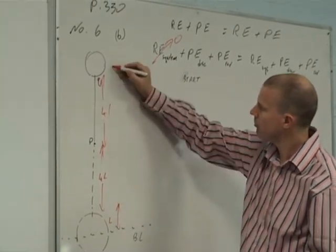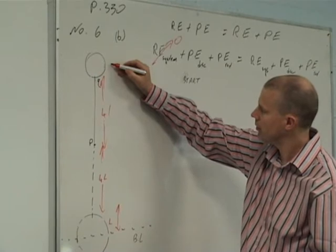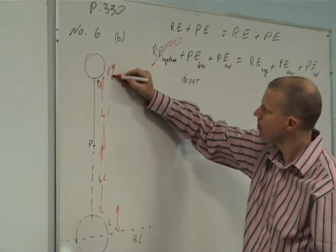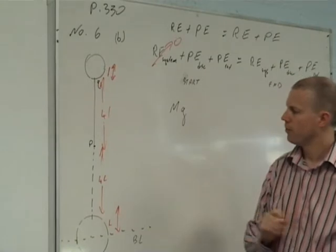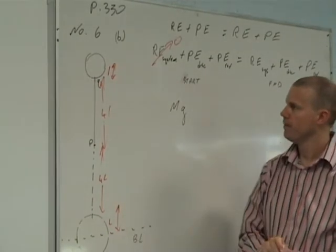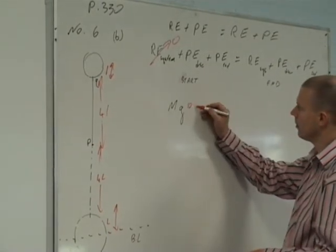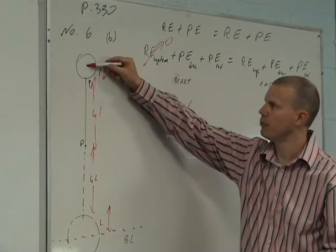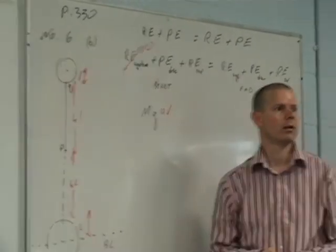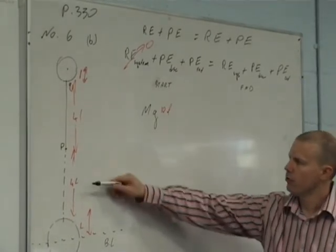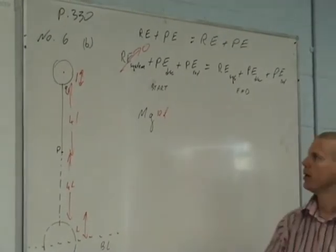This is 4L from there to there, and we've got another L. So from the baseline to there is going to be what? From the baseline to the center of gravity of the object that you're looking at.